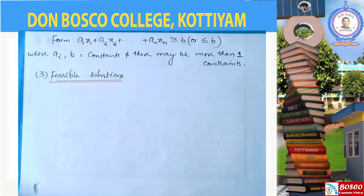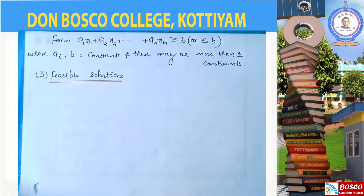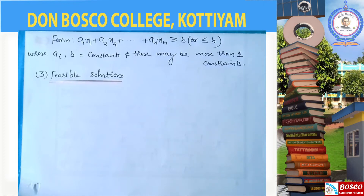In an LPP we have two ingredients: the objective function and the linear constraints. A solution is a feasible solution if the values of X1 satisfy the conditions — that is, the linear constraints or equations. The solution must obey the linear constraints.